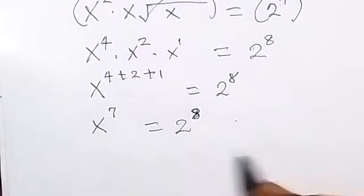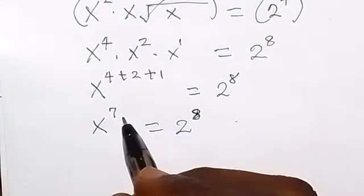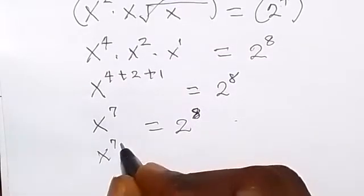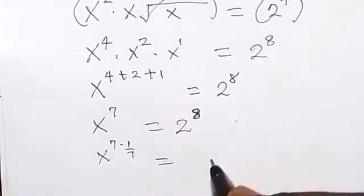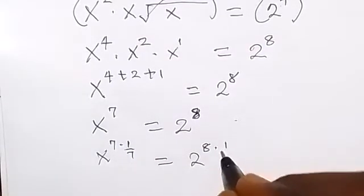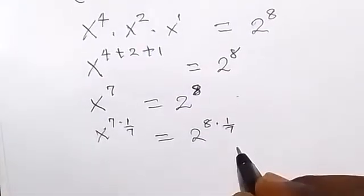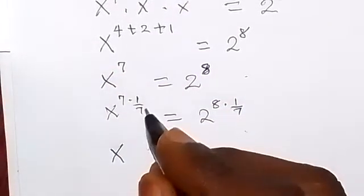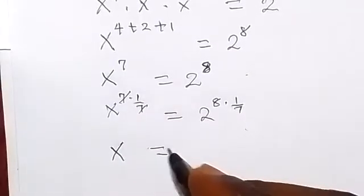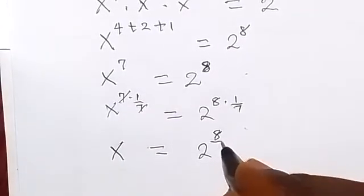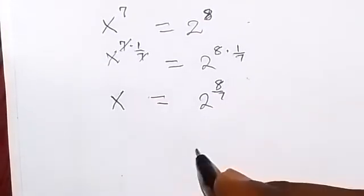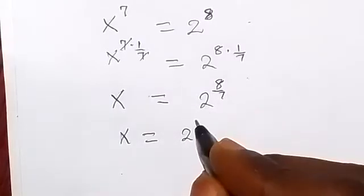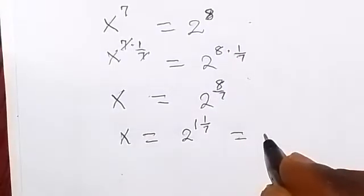What we are finding is x. We can multiply both powers by 1 over 7. So x raised to the power 7 times 1 over 7 equals 2 raised to the power 8 times 1 over 7. This gives us x raised to the power 1, which is x equals 2 raised to the power 8 over 7.